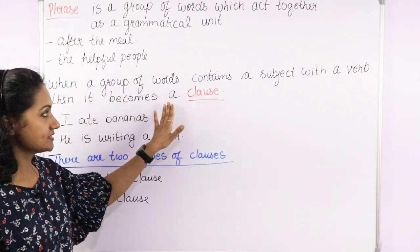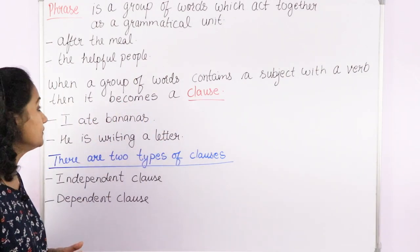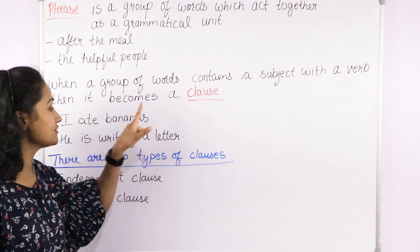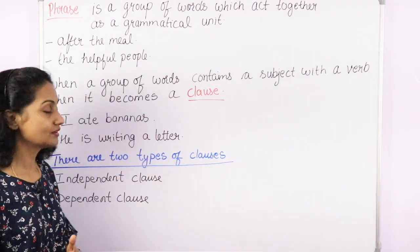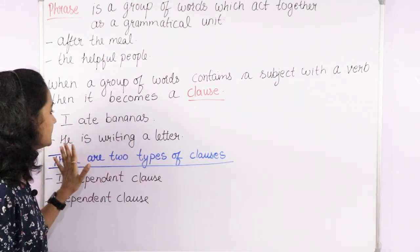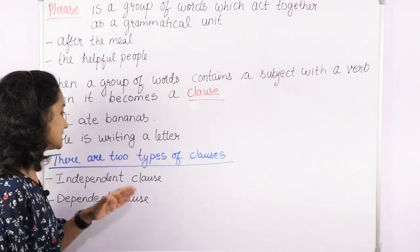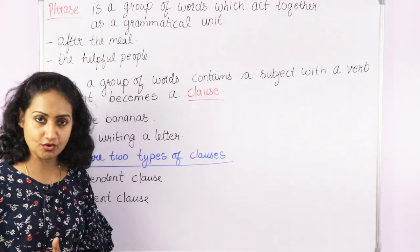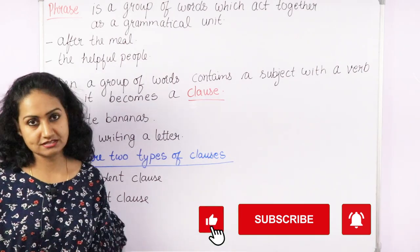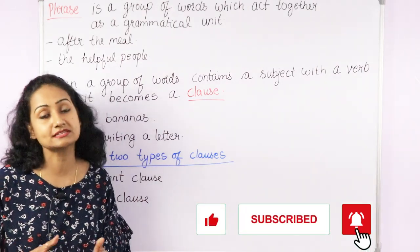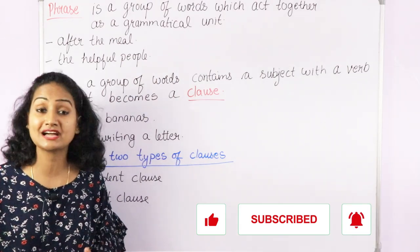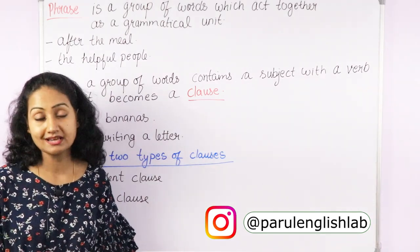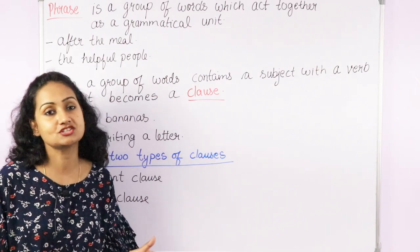When a group of words contains a subject with a verb, then it becomes a clause. For example: 'I ate bananas,' 'He is writing a letter' — so 'he' is the subject and 'writing' is the verb. We can see a relationship between a subject and the verb. This is called a clause. A phrase is merely a group of words that doesn't have a subject and a verb.